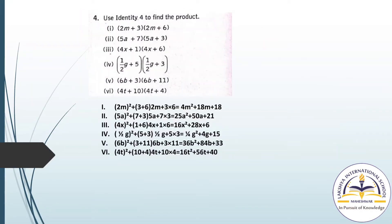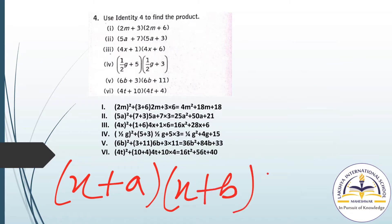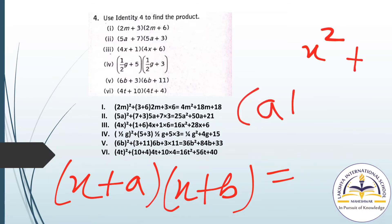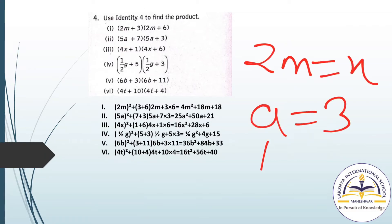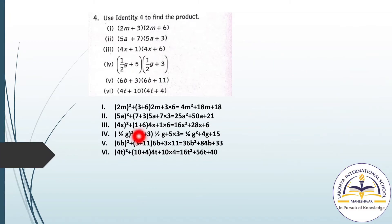Question number 4: use Identity 4 to find the product. Identity 4 is (X + A)(X + B) = X square plus (A + B)X plus AB. For (2M + 3) and (2M + 6): here X equals 2M, A equals 3, and B equals 6. Putting values in the identity: (2M)² plus (3 + 6) into 2M plus 3 into 6.